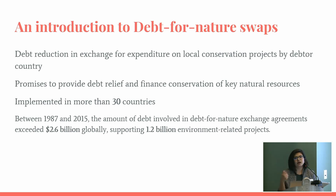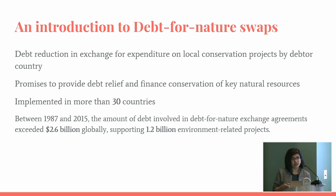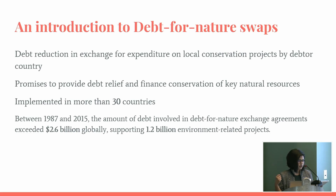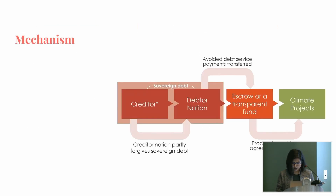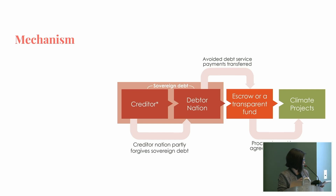The reason I'm talking about this today is because recently debt for nature swaps have gained popularity after a period of being dormant, particularly with the swaps involving Belize, Seychelles, and Ecuador. So, how do these swaps work?